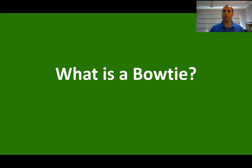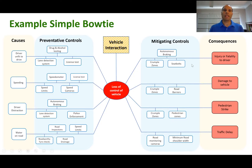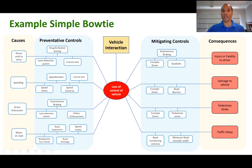What is a bow tie? What's a bow tie analysis? Let's have a look at an example. Here we can see up the top our hazard is vehicle interactions, and our unwanted event here in the middle of the bow tie is the loss of control of a vehicle.